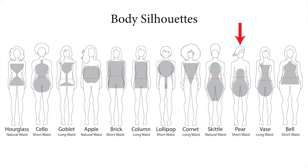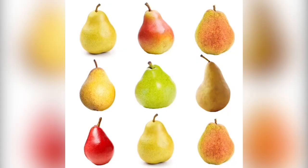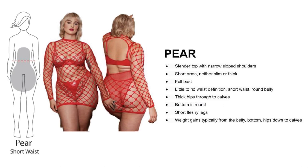The pear shape is the most mischaracterized shape — this is not the nipped-in waist shape many assume it is. Here are the key features: slender top with narrow sloped shoulders, arms are neither thick nor slim, full bust, little to no waist definition, short waist with a long torso, round belly, thick hips through to the calves, very full bottom, short fleshy legs. Weight gain is typically at the belly, bottom, and hips down to the calves.